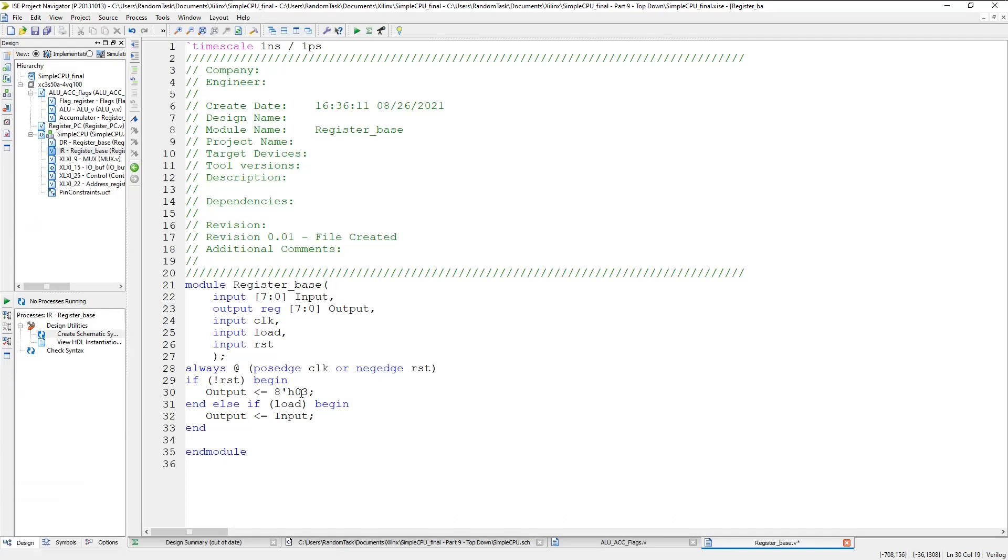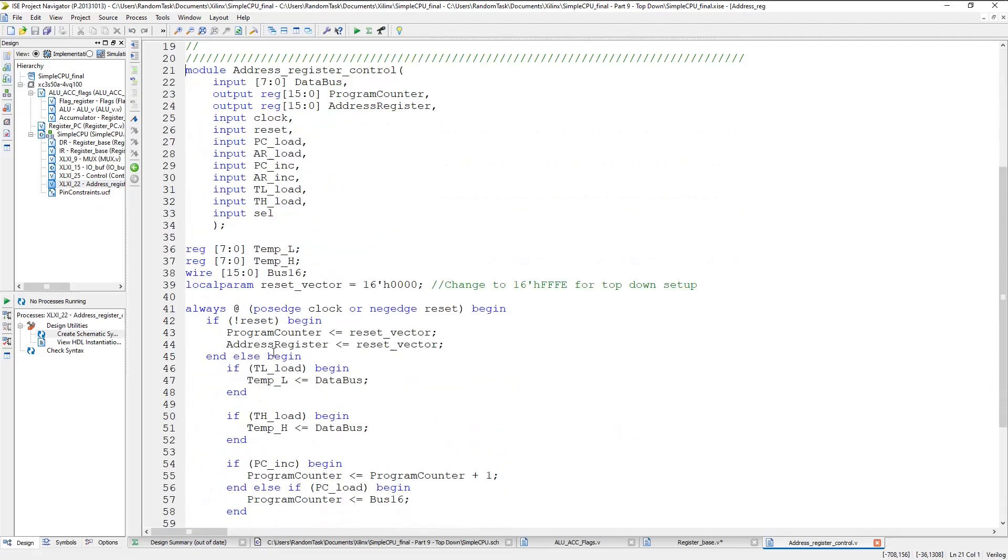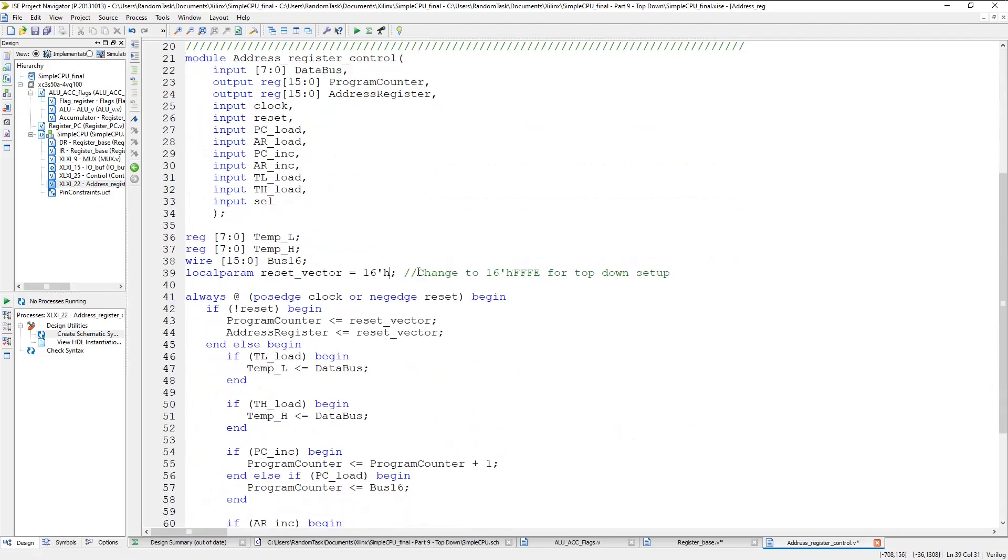Next, the address register control block reset vector value needs to be changed to FFFE. In a future video, when I add an interrupt, the interrupt vector will be located at FFFC and FFFD. The last change is to set the count in the control block to 2 at reset, since that is the state number for jump 1. This is because we've already set the instruction register.